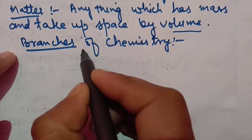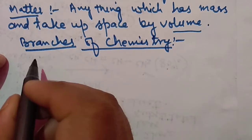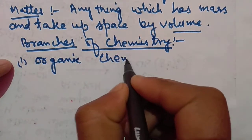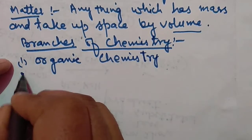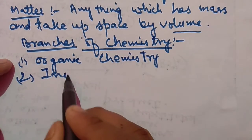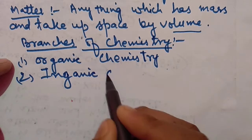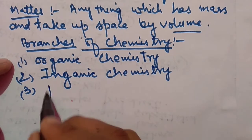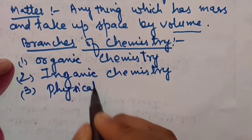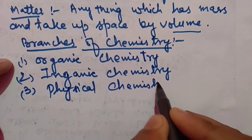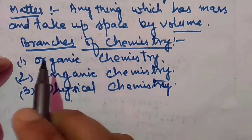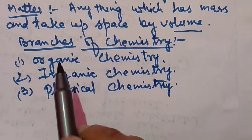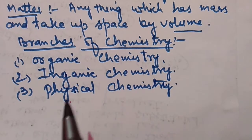Chemistry may be classified into three main branches. First is organic chemistry, second is inorganic chemistry, and third is physical chemistry. These are the three main branches of chemistry. We will discuss these three branches one by one.